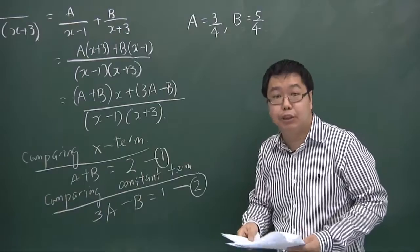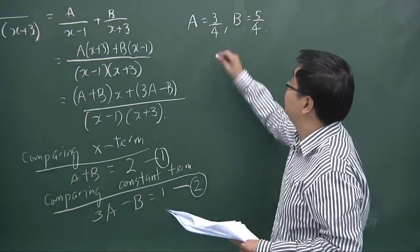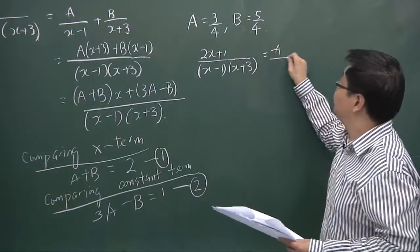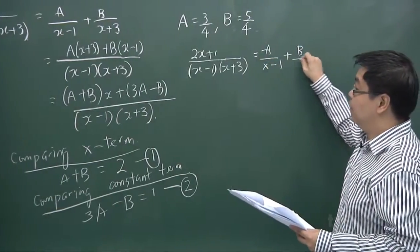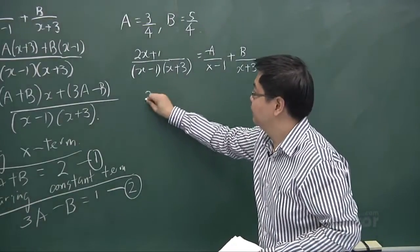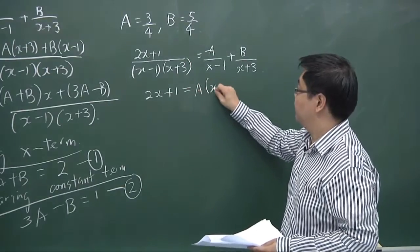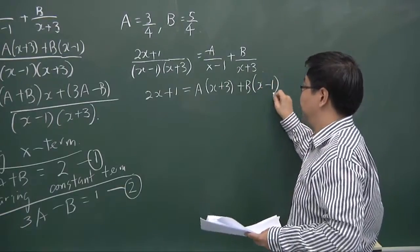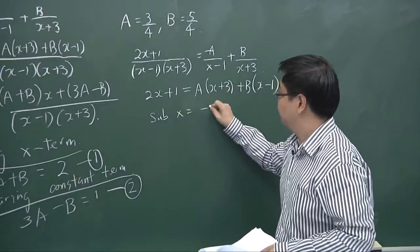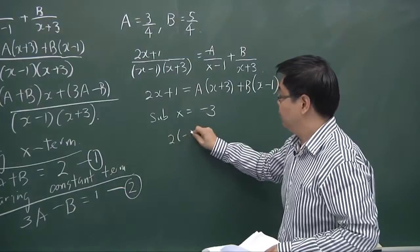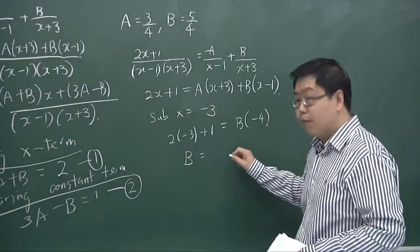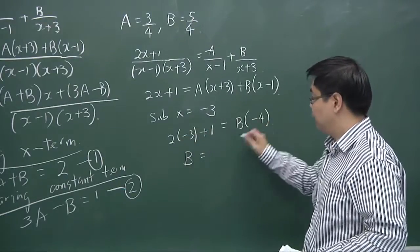The third method is the substitution method. We write 2x plus 1 equals A(x plus 3) plus B(x minus 1) by multiplying both sides by the denominator. We then choose values of x to substitute. Substituting x equals minus 3 makes the A term zero, and we find B equals minus 5 divided by minus 4, which is 5 over 4.